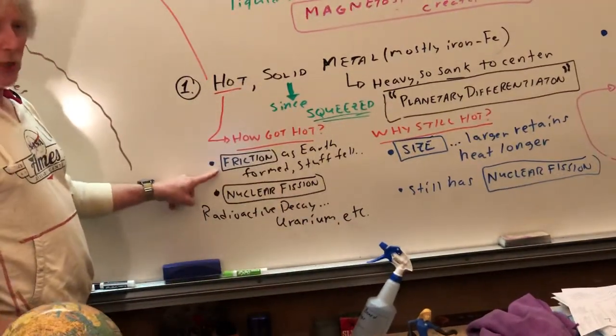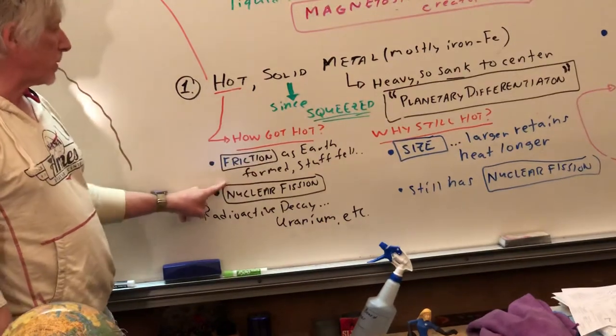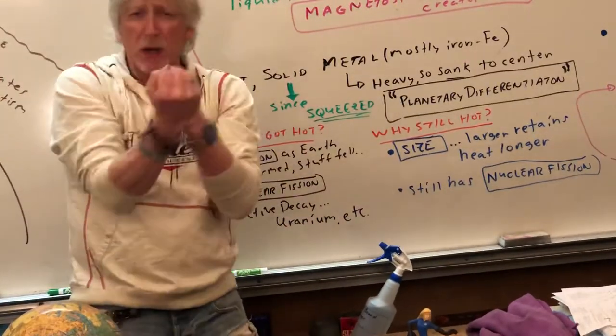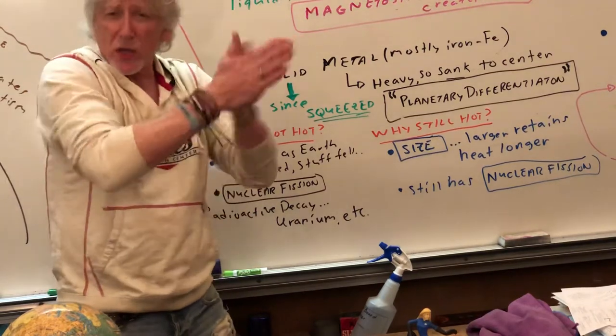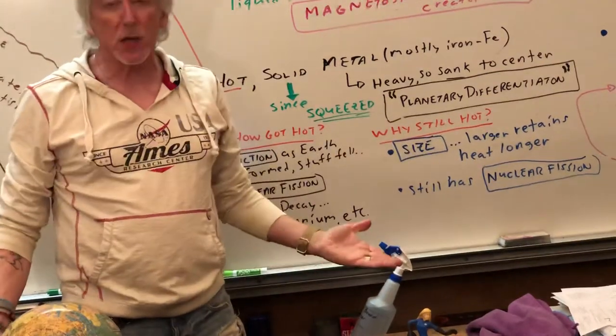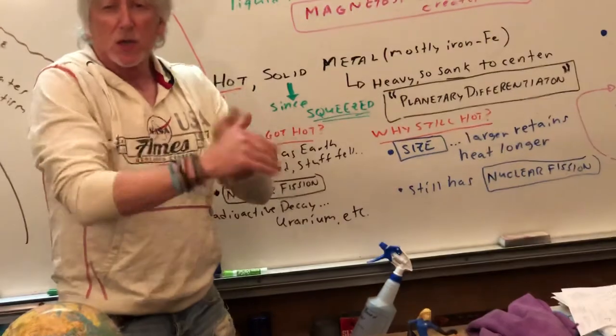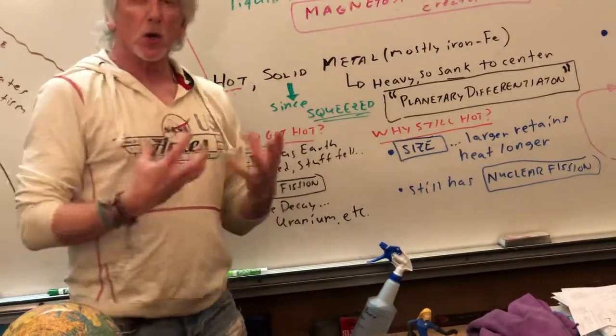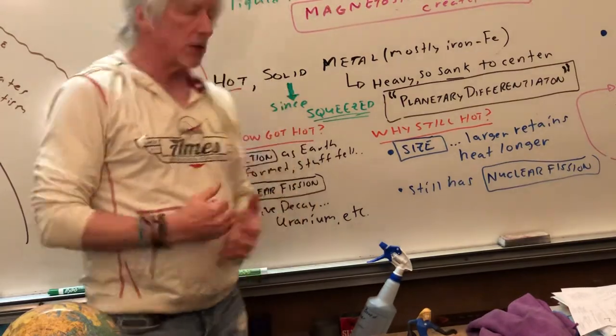So how did it get hot? Friction. As Earth formed, stuff fell, pulled together, sorted out, rubbed each other. You go like this, your hands get warm, right? Friction. So the friction of formation, in formation, Earth got hot.